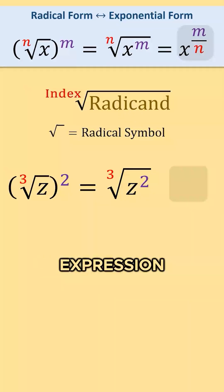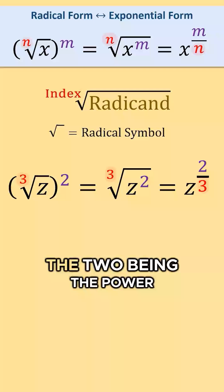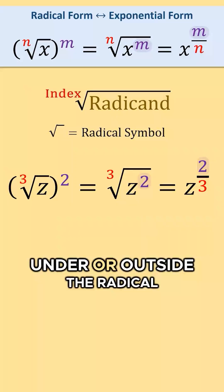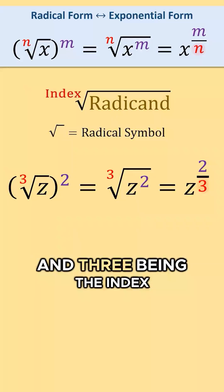Converting this to an exponential expression we can write this as z raised to the 2 over 3 power. The 2 being the power under or outside the radical, and 3 being the index.